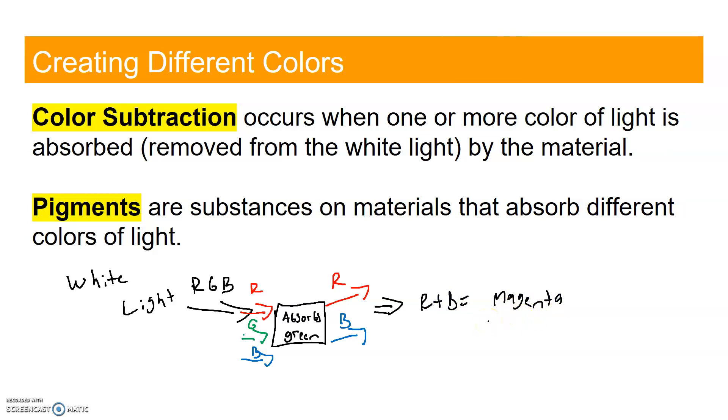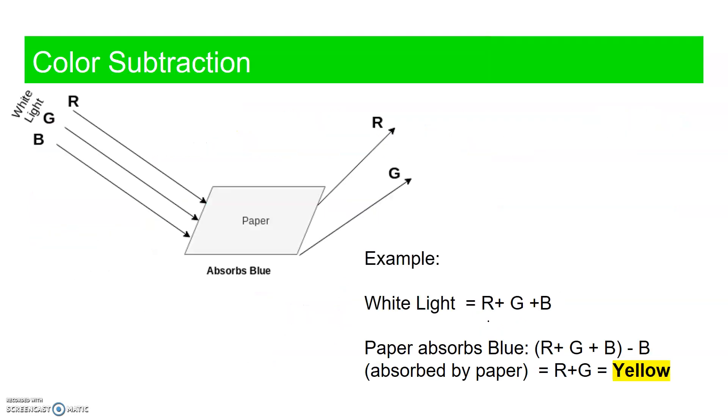White light is red, green, and blue. We subtracted green and got red and blue, and we got magenta. Here's another example. In this case, we got white light, which is red, green, and blue, coming in. This paper takes away blue, and then all that's left is red and green. What does red plus green give you? Yellow.